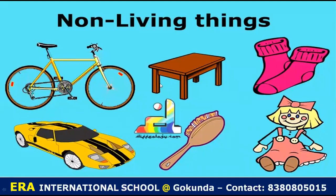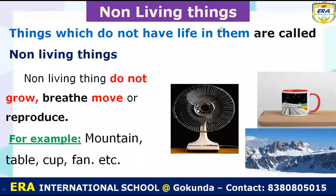Now we learn about non-living things. You can see the cycle, the table, the socks, the doll, the car — different types of objects. These are examples of non-living things. What is meant by non-living things? Things which do not have life in them are called non-living things. Examples of non-living things are fan, cup, and mountains.